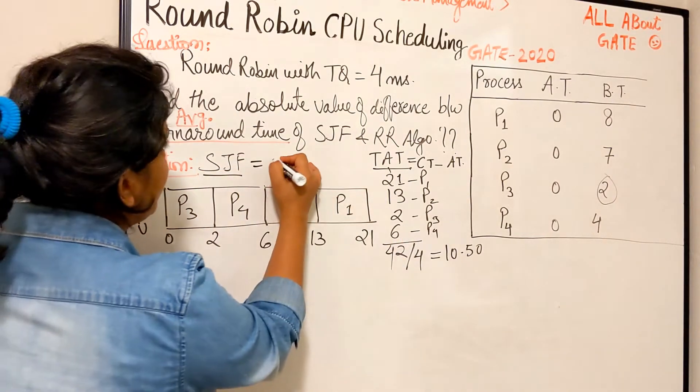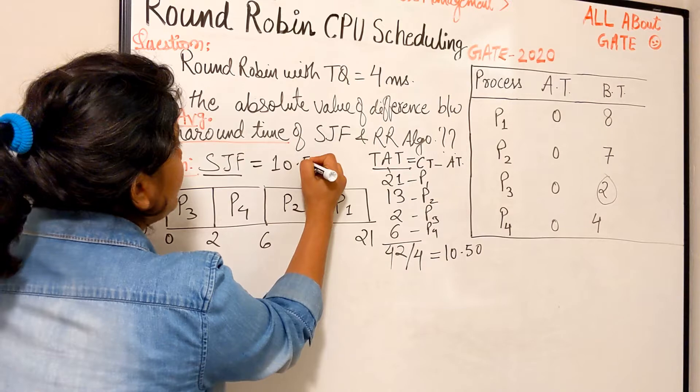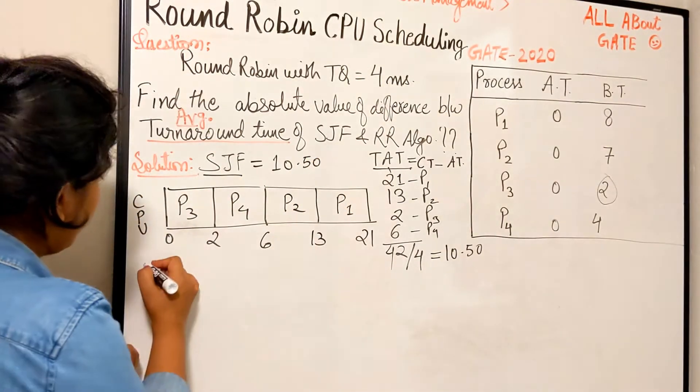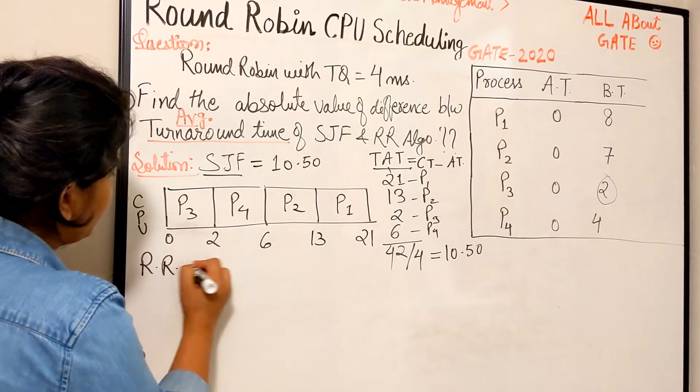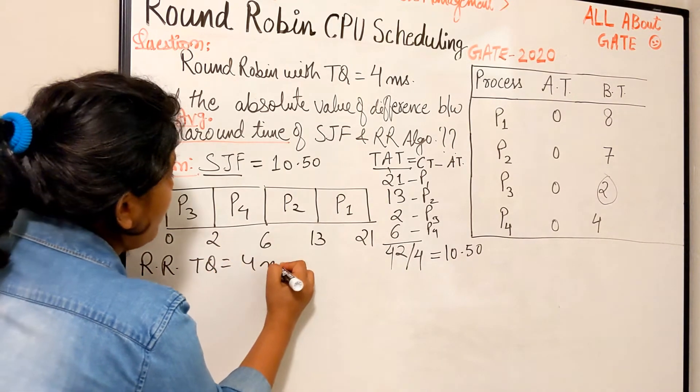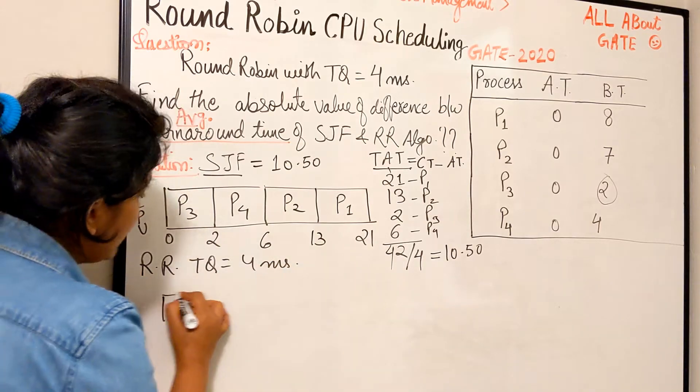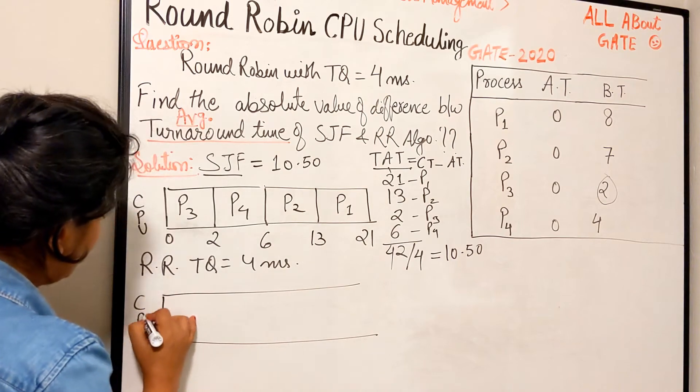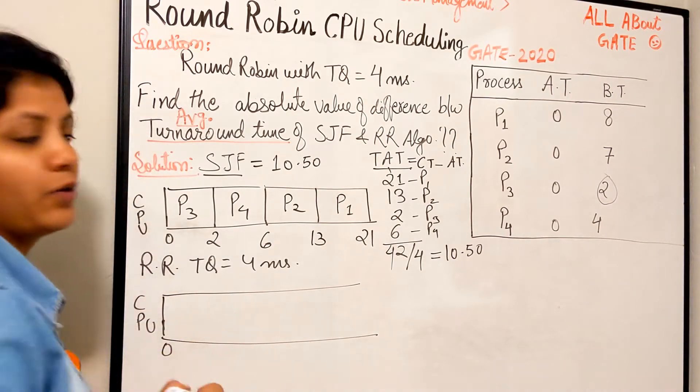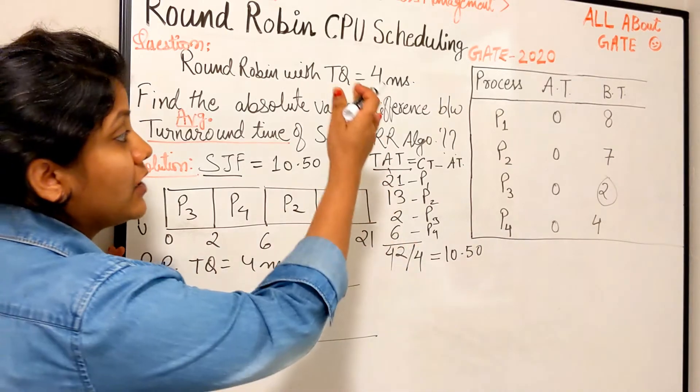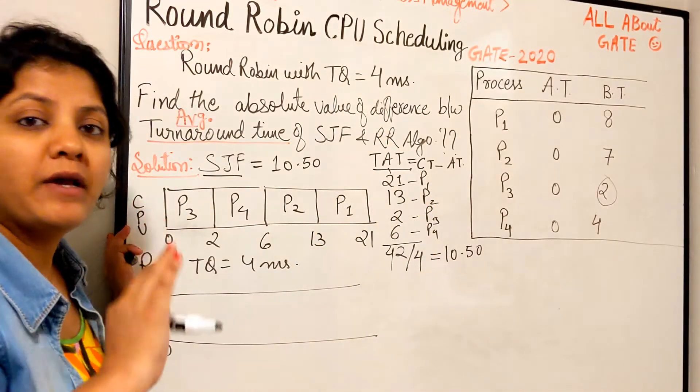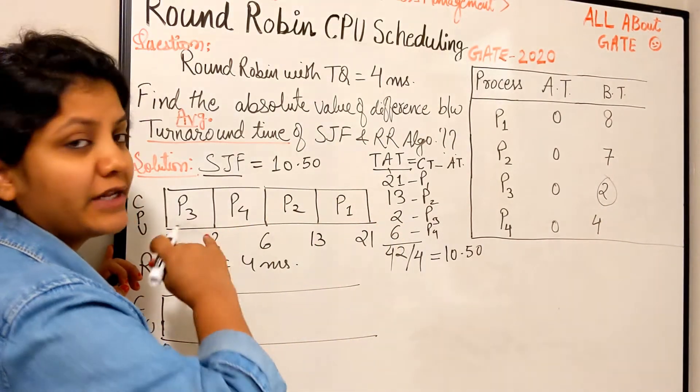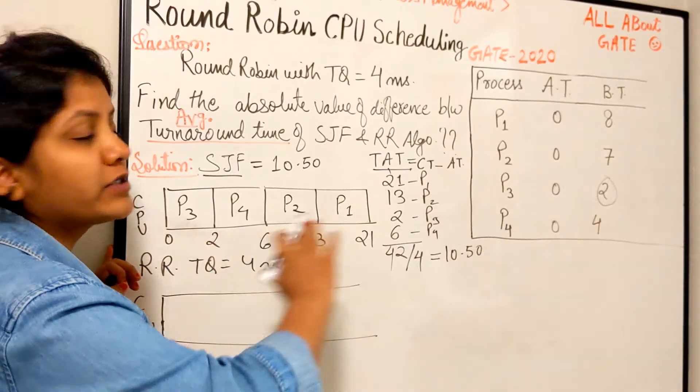For SJF, average turnaround time is 10.50. This is half the work done. Now we'll do Round Robin CPU scheduling with time quantum 4 milliseconds. At time 0, all processes are already in the ready queue, so I'm not making a separate ready queue. P1, P2, P3, P4 will be the order, so I'll start with that order.